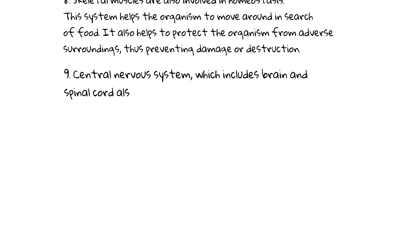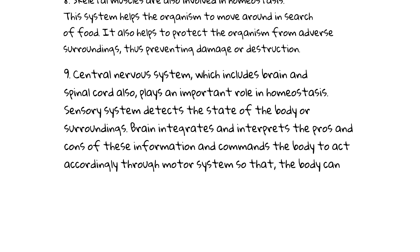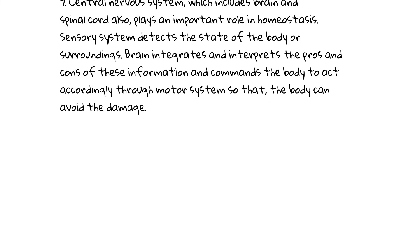The central nervous system, which includes the brain and spinal cord, also plays an important role in homeostasis. The sensory system detects the state of the body or surroundings. The brain integrates and interprets the pros and cons of this information and commands the body to act accordingly through the motor system, so that the body can avoid damage.